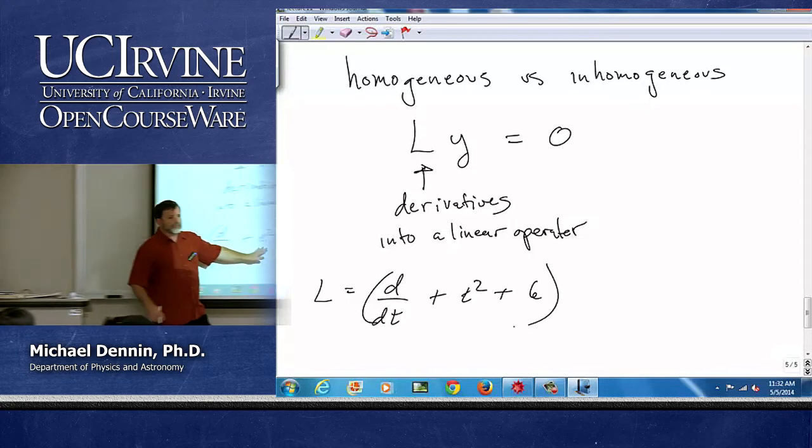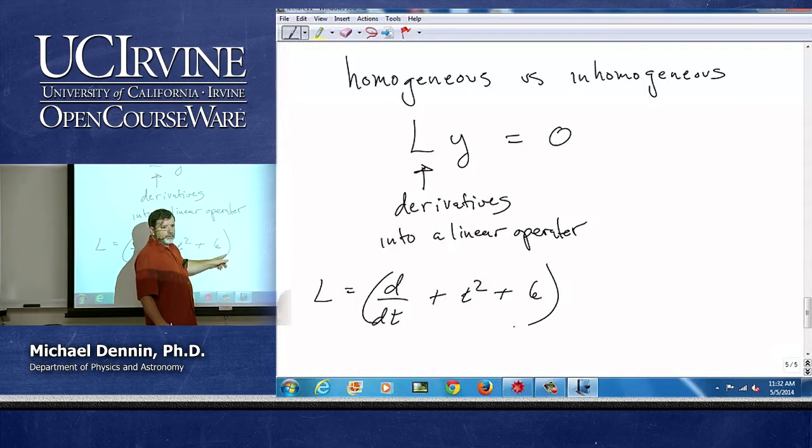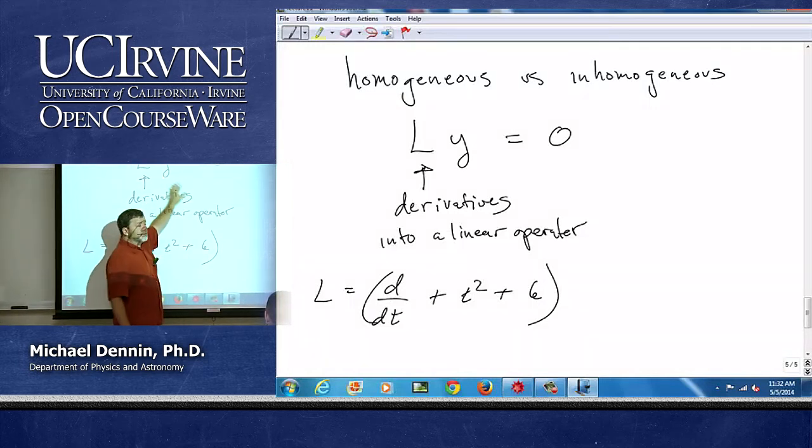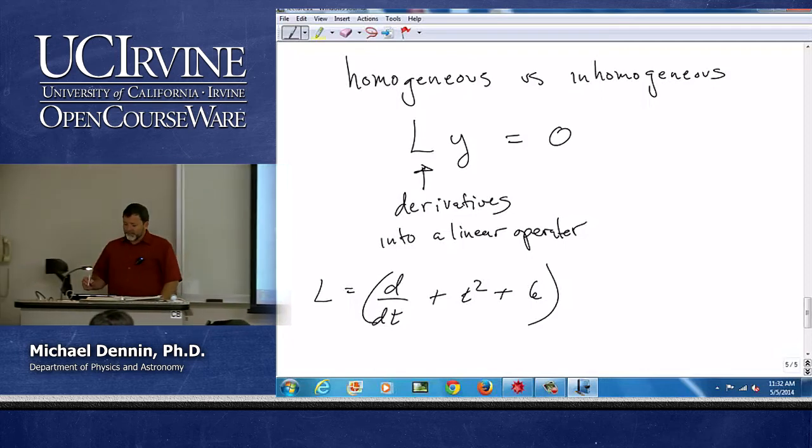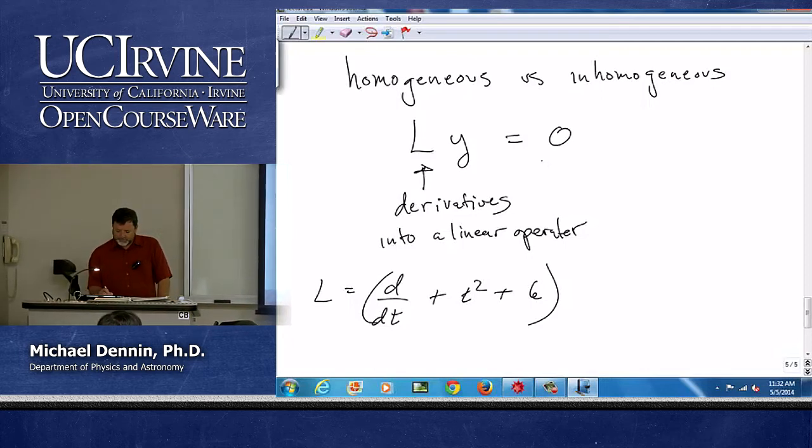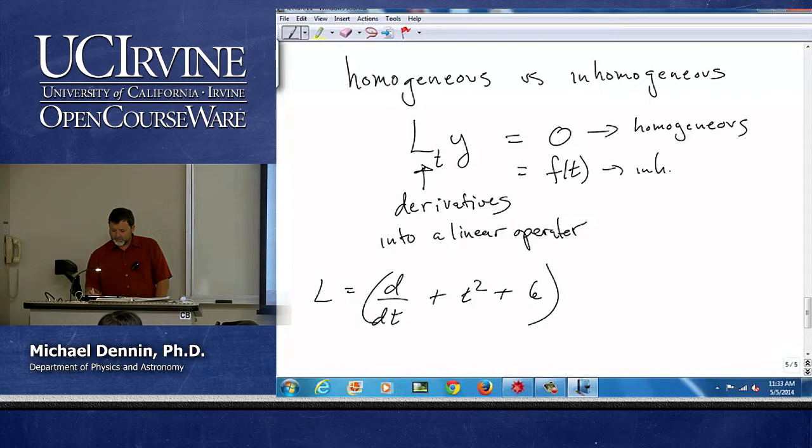And so that'll give me dy/dt plus t² y plus 6y. So linear equation, but it's equal to zero, so it's homogeneous. If, let's suppose this is an operator with respect to t, if all of this equals some function of t with no y's in it, then that's inhomogeneous. So this is homogeneous, and this is inhomogeneous.